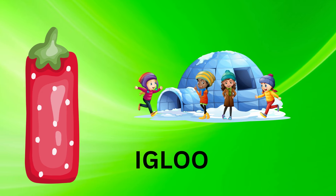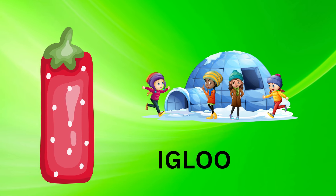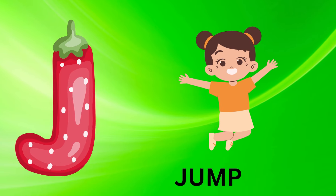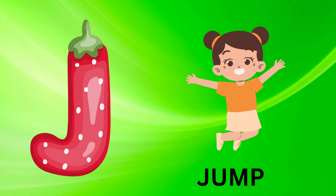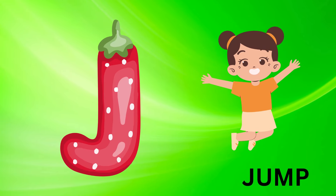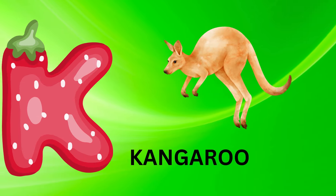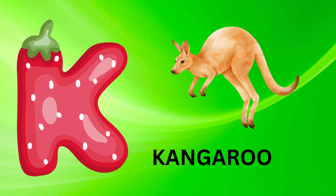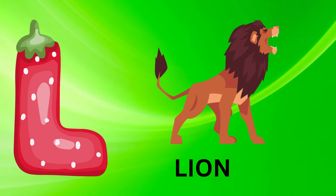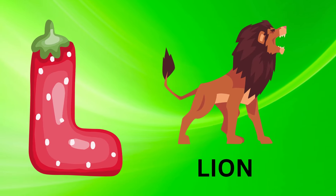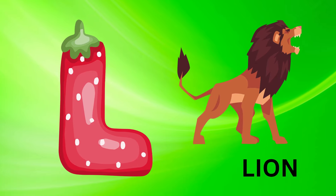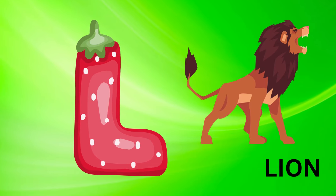I is for igloo, i-i-igloo. J is for jump, j-j-jump. K is for kangaroo, k-k-kangaroo. L is for lion, l-l-lion.